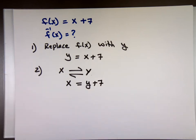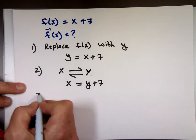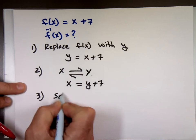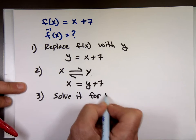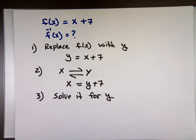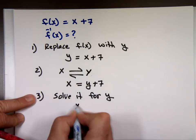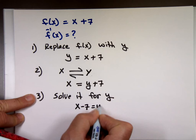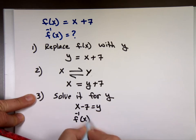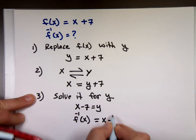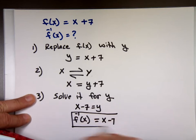And what's the last step? Solve it for y. So, you got what? x minus 7 equals y and that's your inverse function. f of minus x or f negative 1 of x is x minus 7. That is the inverse of this function.